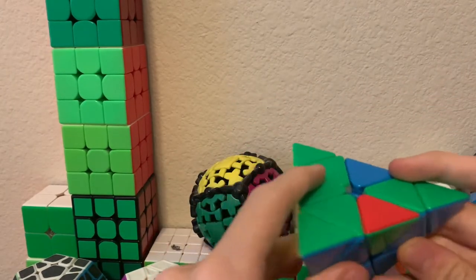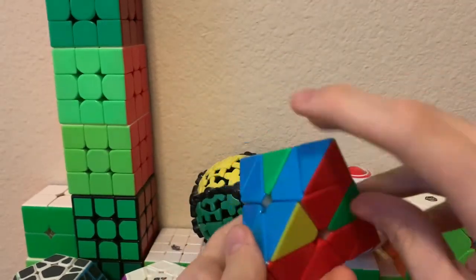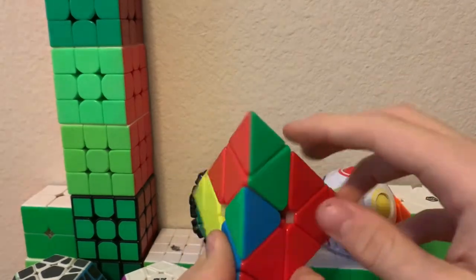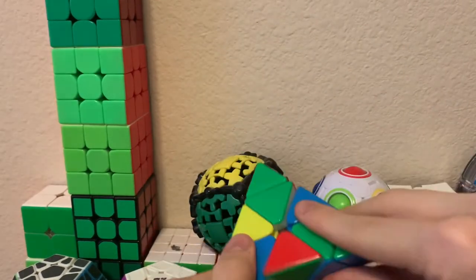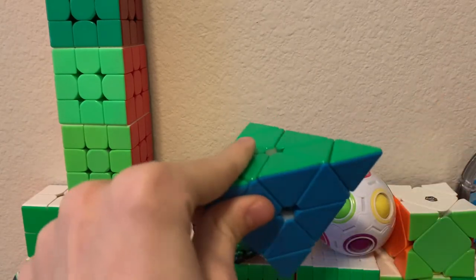This already has a matched edge piece so we should now match an edge piece to the center and we can do that with that. And now just insert the last piece and the rest of the cube solves itself.